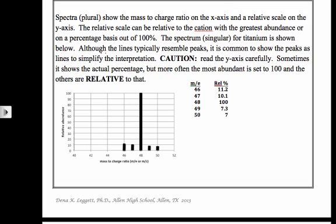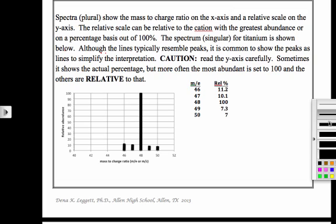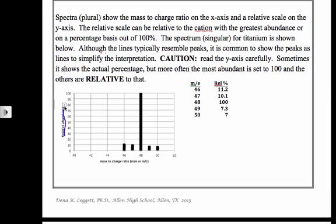Sometimes it will show the actual percentage—easy enough, just read it off the y-axis. Now the key to interpreting these spectra is to take a look at that y-axis. You notice here it says relative abundance.